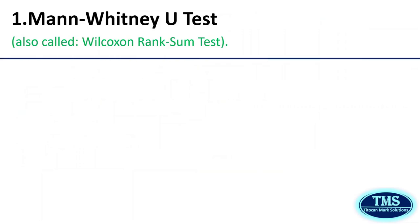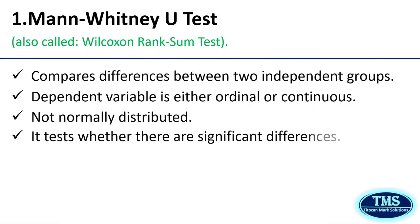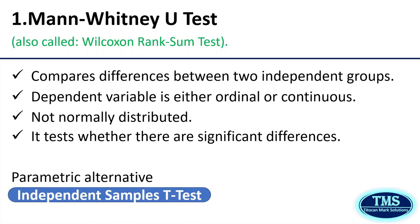The first on the list is the Mann-Whitney U test. This test is used to compare differences between two independent groups when the dependent variable is either ordinal or continuous but not normally distributed, and it is used to test whether there are significant differences in the medians of the dependent variable between the two grouping variables. The parametric alternative is the independent sample T-test. You are expected to consider performing a Mann-Whitney U test if and only if the parametric assumptions of the independent sample T-test are not met, satisfied, or fulfilled by your data.